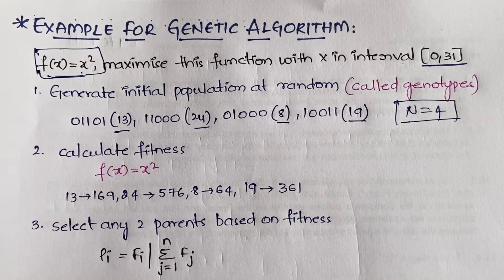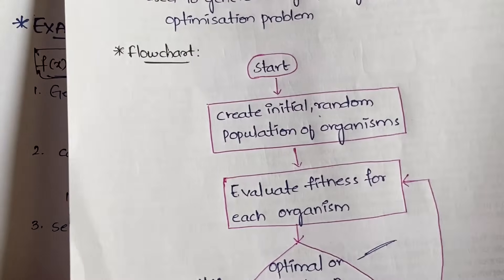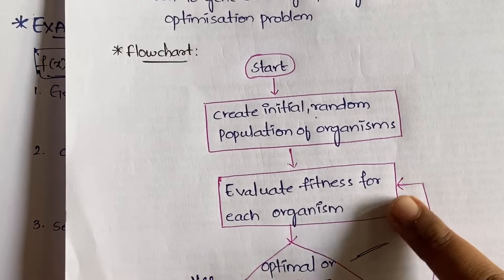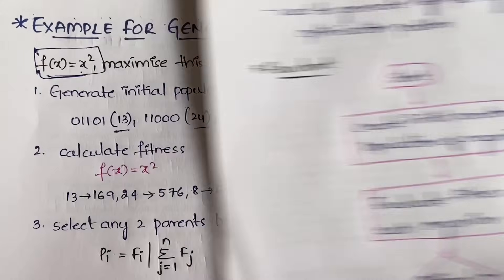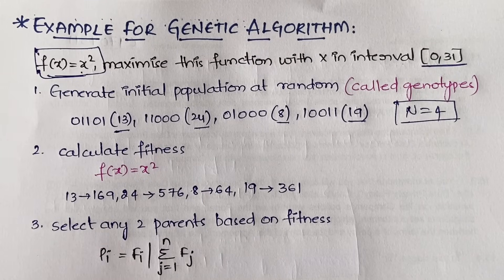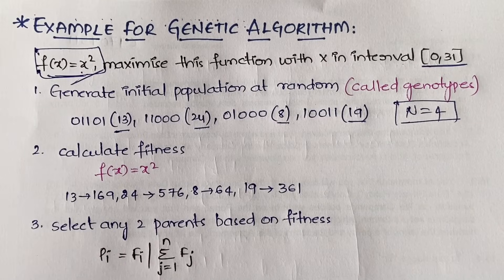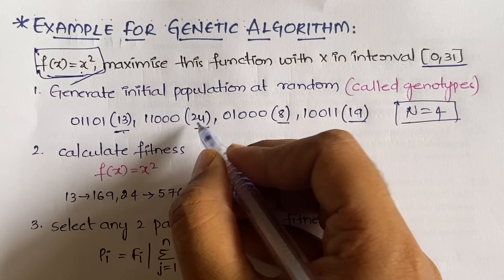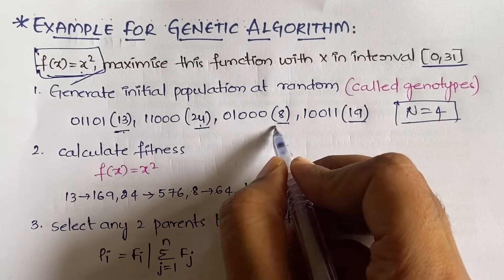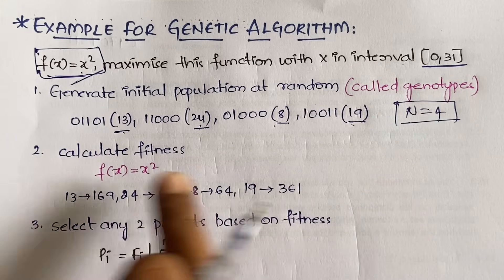Once you have the initial random population, the second step is to evaluate the fitness for each and every organism. You calculate the fitness using the function given in the question, which is f(x) = x². So for 13, 13² = 169; for 24, 24² = 576; 8² = 64; 19² = 361.